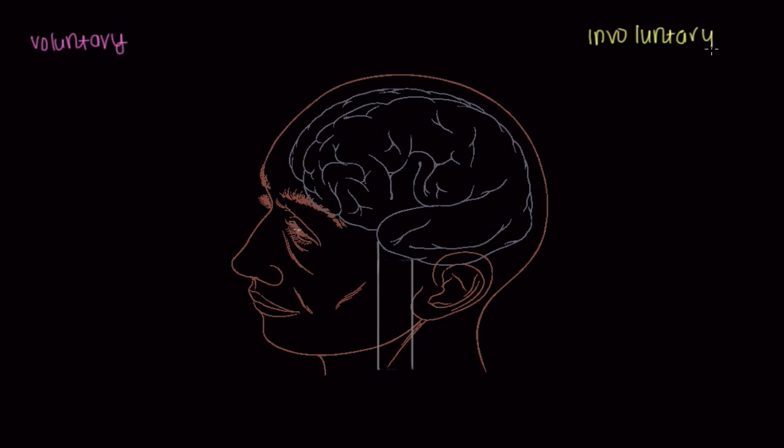Now, the first question that should come to your mind is, why do we have this sort of a setup? Why is it important to have things that are involuntarily contracting? Well, think about structures in our body that we don't actively think about.